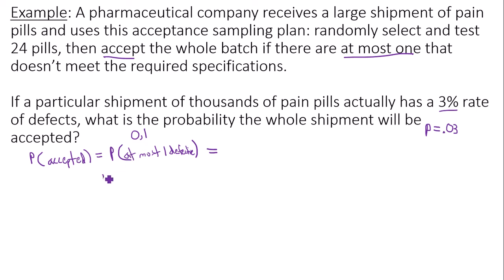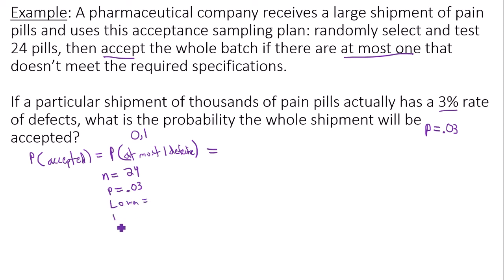Alright, so in Google Sheets you need your number of trials — the number of pills you're going through, which would be 24. Probability of a success, or P, is equal to .03. And then lower bound and upper bound: you're looking at either zero or one pills being defective, so lower bound is zero and upper bound is one.